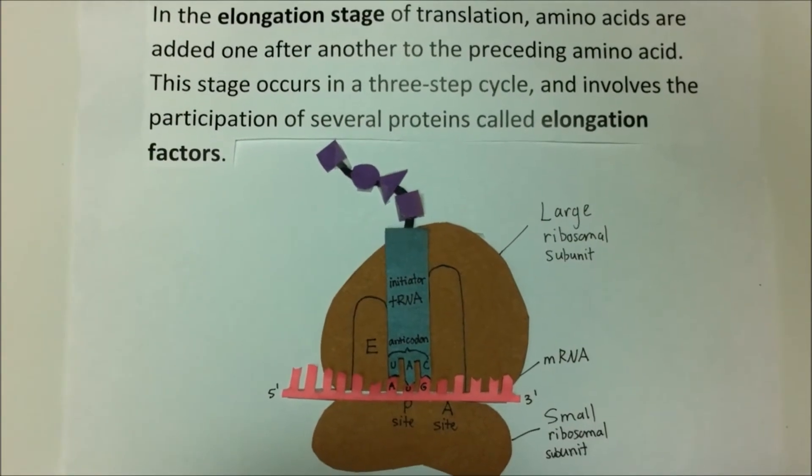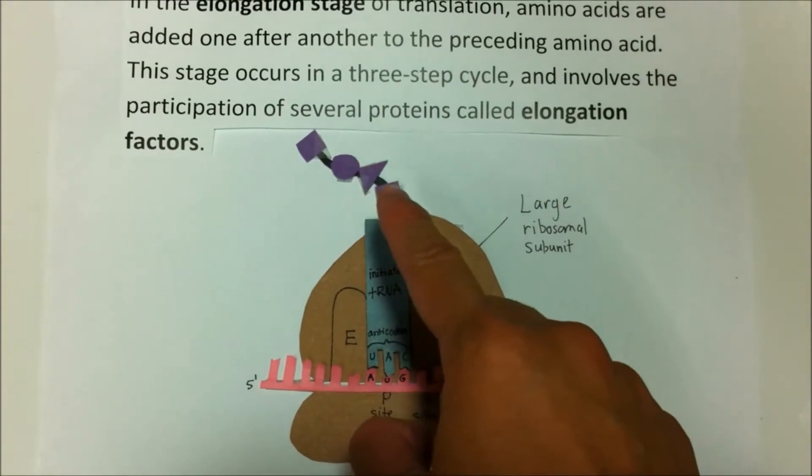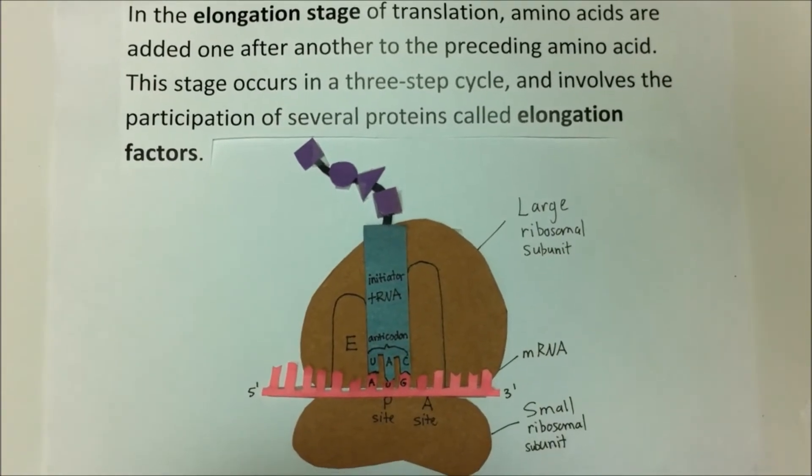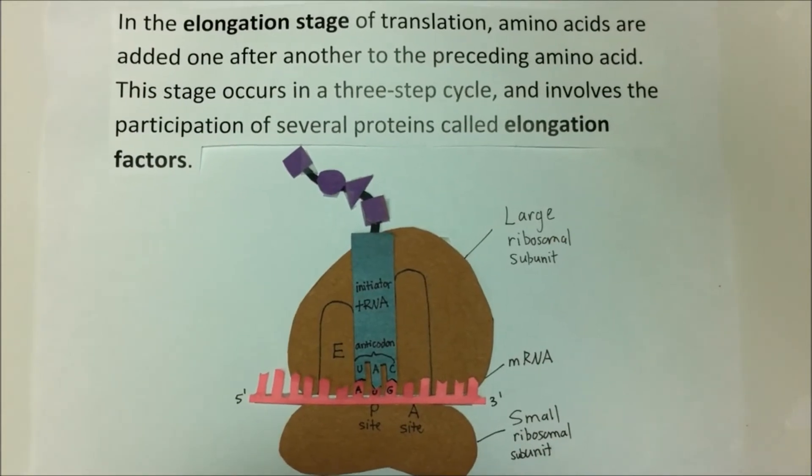In the elongation stage of translation, amino acids are added one after another to the preceding amino acid. This stage occurs in a three-step cycle and involves the participation of several proteins called elongation factors.